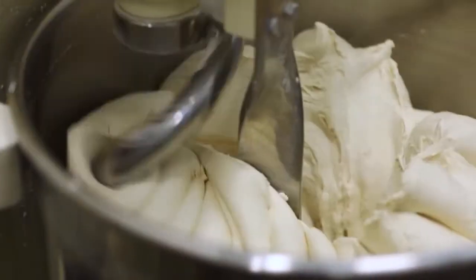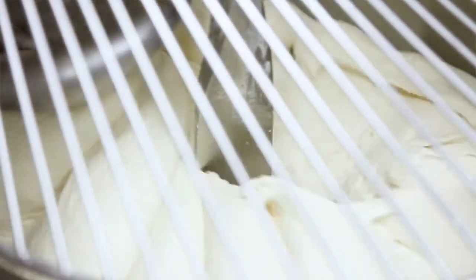All of our spiral mixers, including our fixed bowl models, feature reversible bowls that can spin both counterclockwise and clockwise. This translates into less time required to process batches of dough and more consistent results.